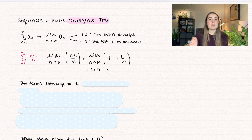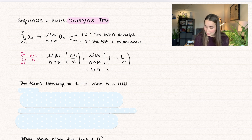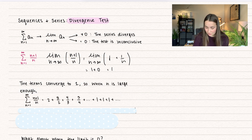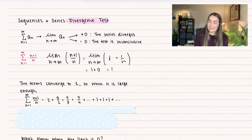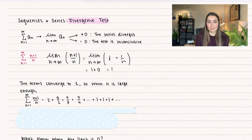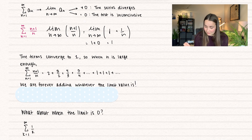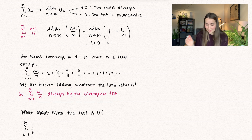The terms converge to 1, so when n is large enough, the summation from n equals 1 to infinity looks like 2 plus 3/2 plus 4/3 plus 5/4, and eventually the terms converge to 1. We're infinitely adding 1s, so it will never converge — it will always grow and diverge to infinity. We are forever adding the limit value, so the series diverges by the divergence test.